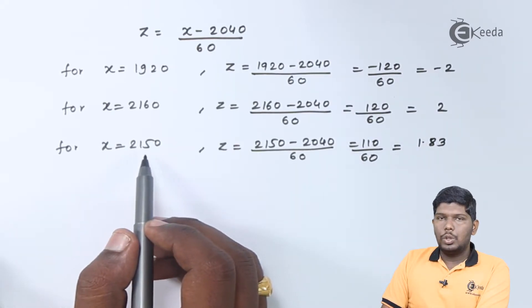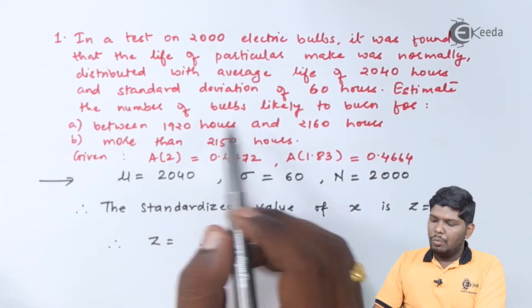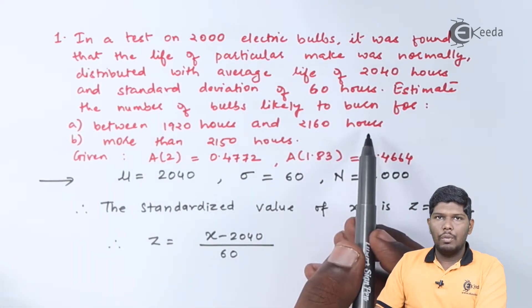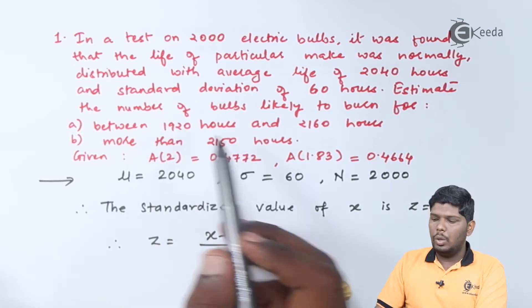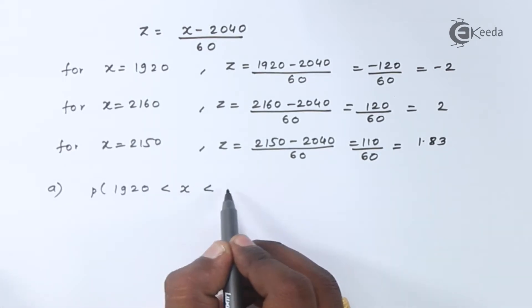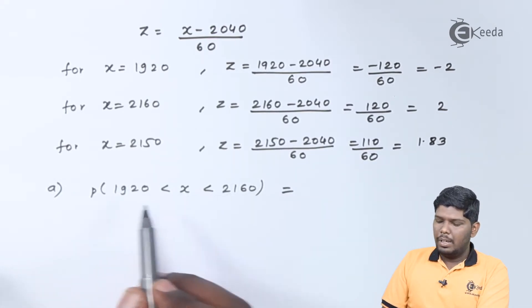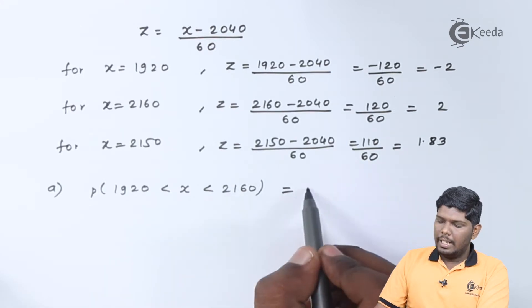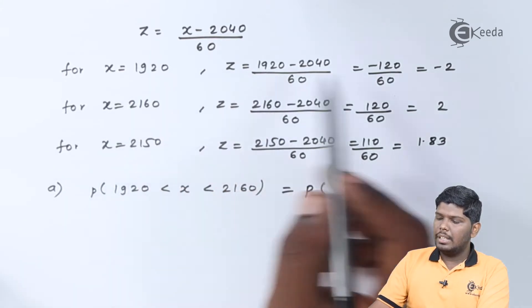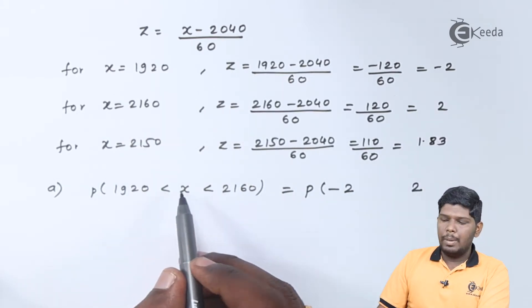For the third value x = 2150, the standardized value z = 1.83. In the first part, we are asked to find the estimated number of bulbs likely to burn between 1920 hours and 2160 hours, so x is between 1920 and 2160. This corresponds to z between −2 and +2.